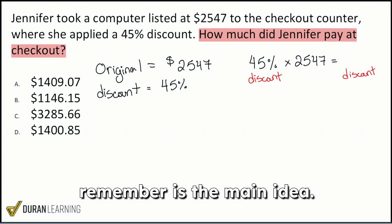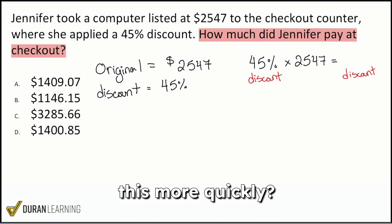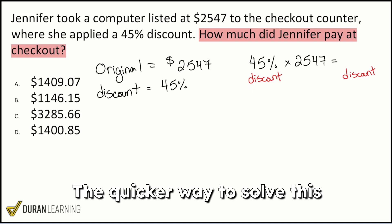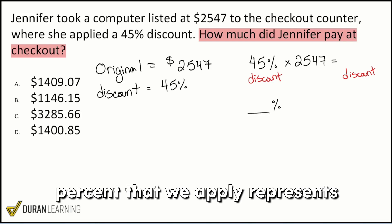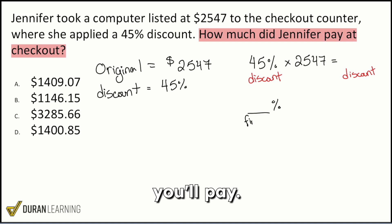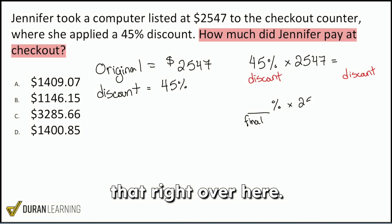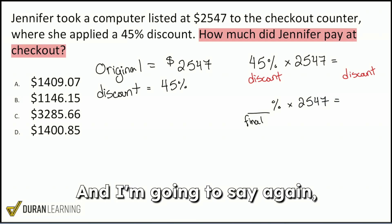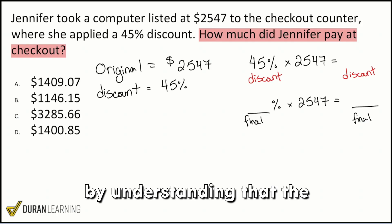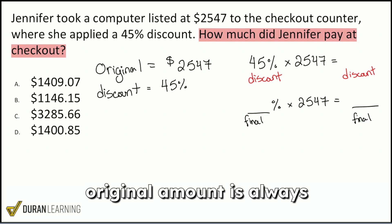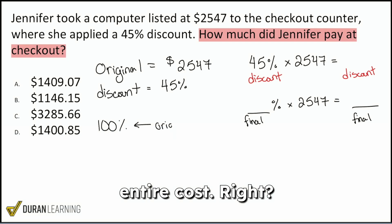So all you really have to remember is the main idea: the percent you apply is the result you get. The quicker way to solve this is to make sure that the percent you apply represents the final amount that you'll pay. And here's how we can do that: the original amount is always represented by 100% — that is the original entire cost.